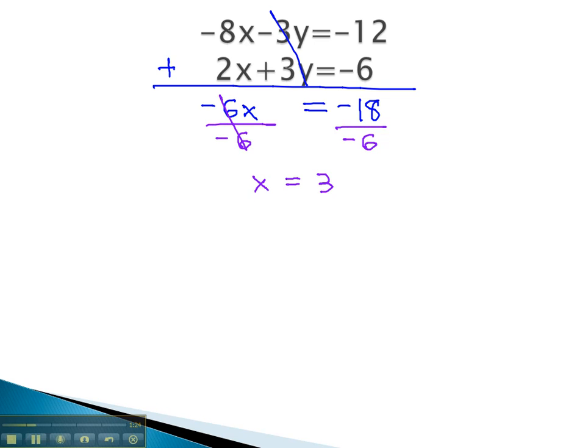We still must find y, and the way we will do that is go back to either original equation and replace the x with a 3. The second equation has smaller numbers, so it may be the easier one to use. When I replace that x with 3, we get 2 times 3 plus 3y equals negative 6.